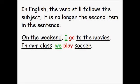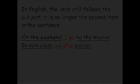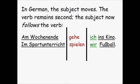In English, the verb still follows the subject — it is no longer the second item in the sentence. I go. We play. In German, the subject moves. The verb remains second. The subject now follows the verb. Am Wochenende gehe ich ins Kino. Im Sportunterricht spielen wir Fußball.